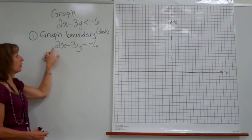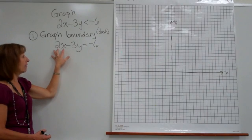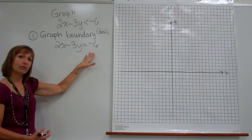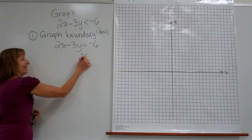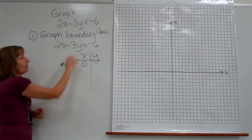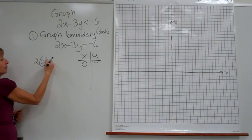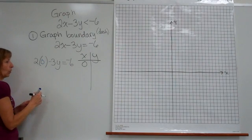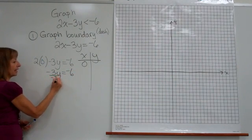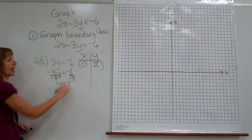Now let's get back to graphing the boundary. This equation is a linear equation in general form, with the x term and y term on the left side of the equal sign. I can graph it easily using the intercept method. First, I put 0 in for x: 2 times 0 minus 3y equals negative 6. Since 2 times 0 is 0, we get negative 3y equals negative 6. Dividing both sides by negative 3 gives y equals 2. So the y-intercept is (0, 2).